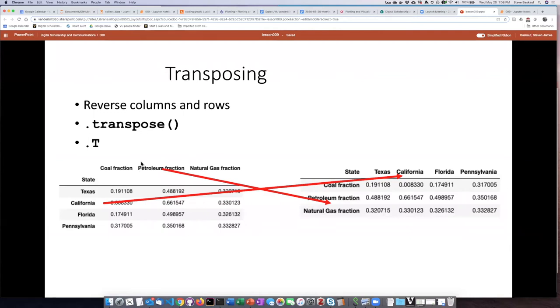The things that were the columns before end up being the rows. The things that were the rows before end up being the columns. So it basically changes the shape of the table. If it was a 4 by 3 table before, it's going to be a 3 by 4 table when you get done.